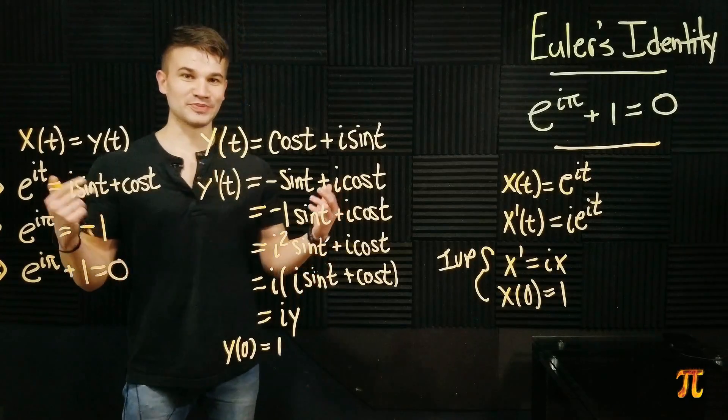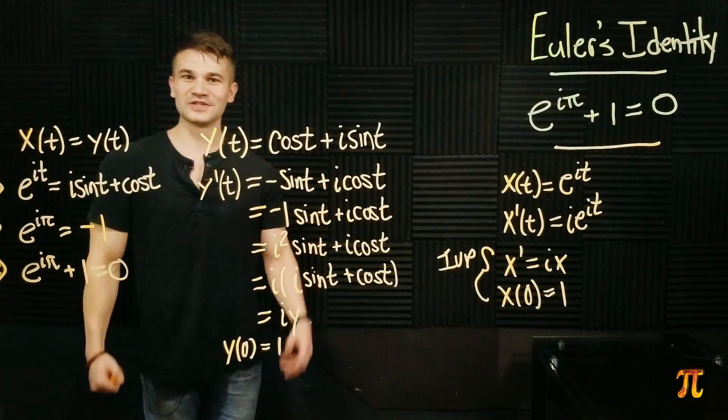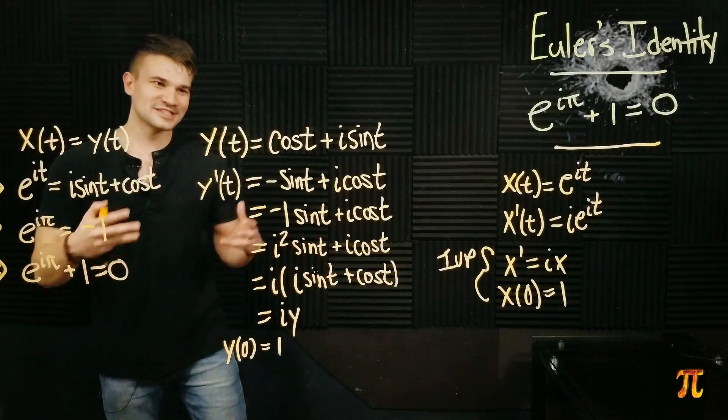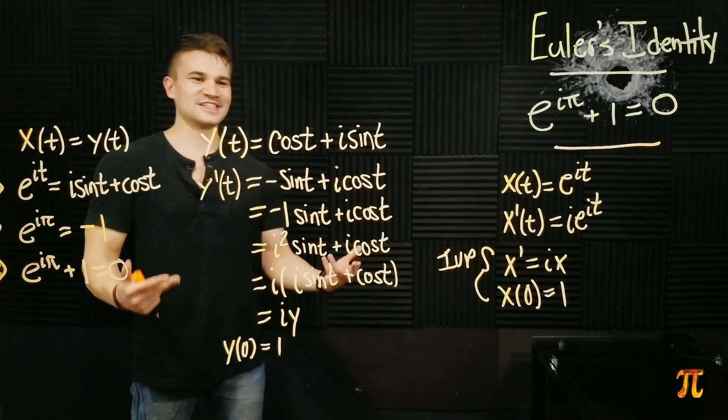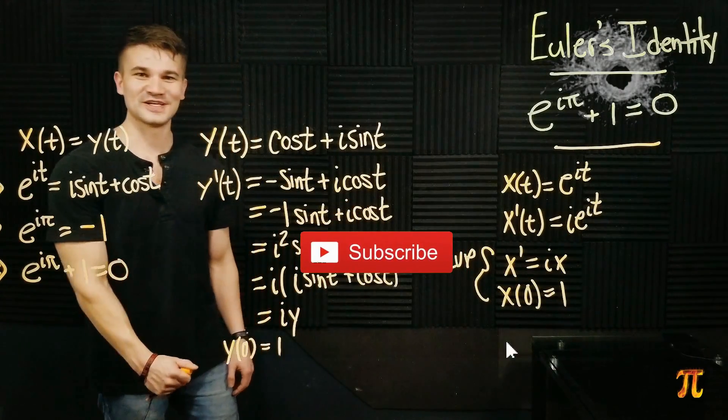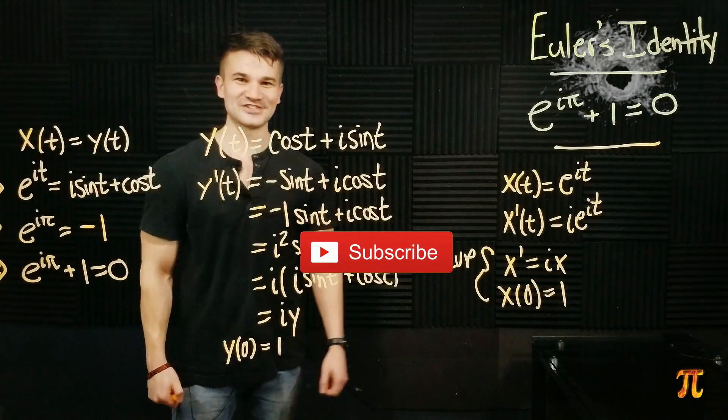Now this proof does rely on Picard-Lindelof which is a pretty big result. So we're kind of killing an ant with a shotgun here. But it's still an interesting little proof that I haven't seen done before. So I wanted to make a video and show you guys this neat little proof of Euler's identity. Hope you enjoyed and I'll see you next time.